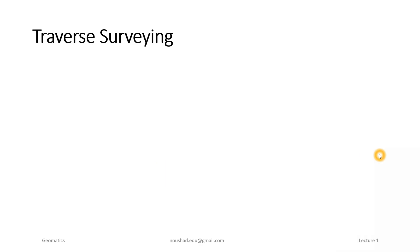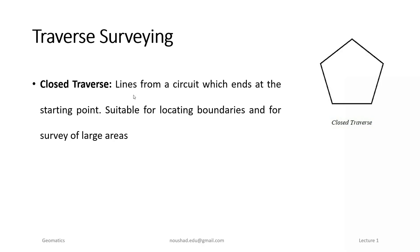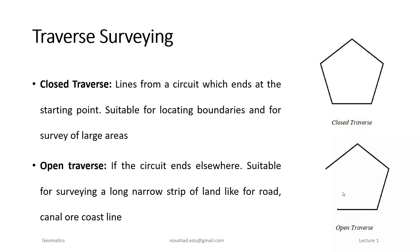Usually a traverse can be a closed one or an open one. A closed traverse consists of lines that form a circuit which ends at the starting point. An open traverse means it does not end at the starting point.